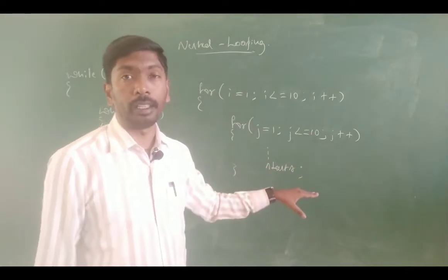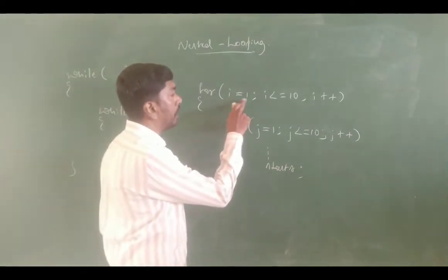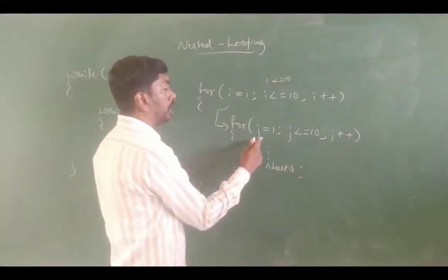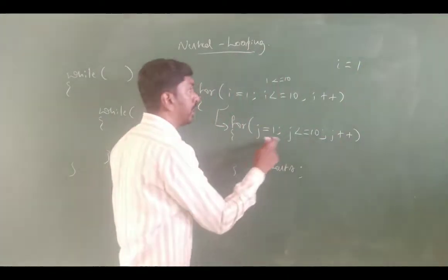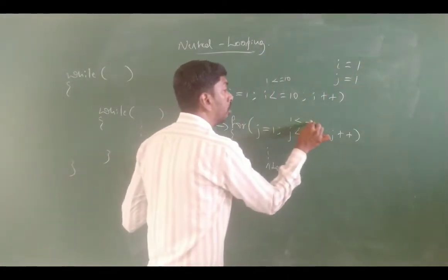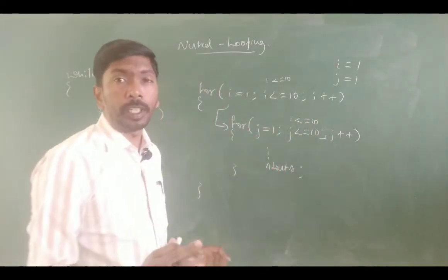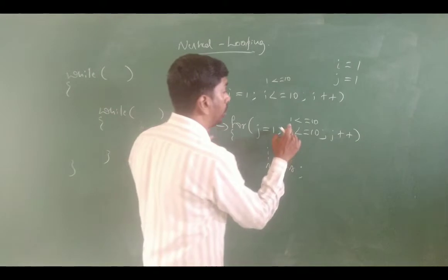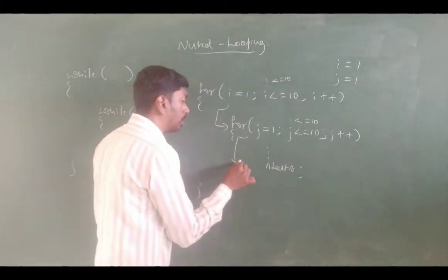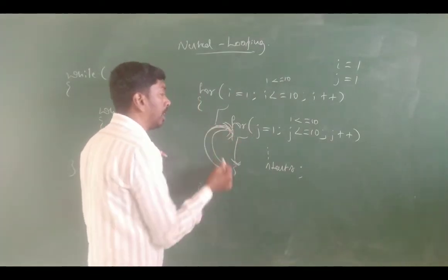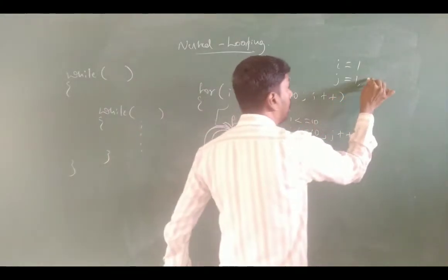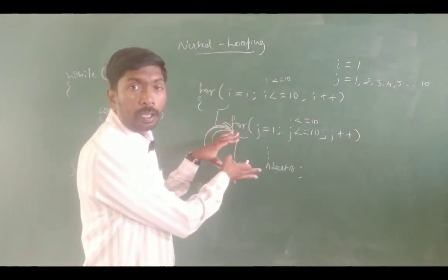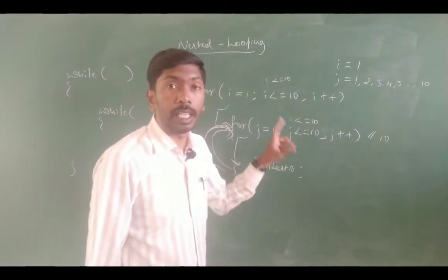Let's trace the execution: condition check — for i equal to 1, i is less than or equal to 10, condition is true, so entry happens. Then j is equal to 1 and i value is 1. Since 1 is less than or equal to 10, the inner loop repeatedly executes the block of statements until the condition becomes false. The inner loop executes j equals 1, 2, 3, 4, 5, 6, 7 up to 10 — that is 10 times execution for i value 1.